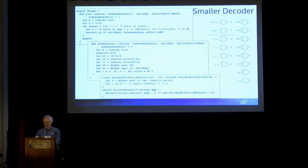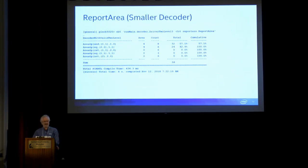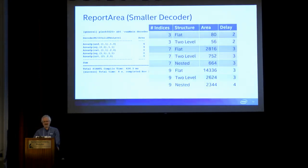Here's some Chisel code that'll do the same thing. Then you can run it through the area reporter. In this case, it's 56 units worth of area instead of 80 units worth of area. You can do this for various different sizes of circuits, and it actually matters as the number of indices gets bigger—that's quite a lot better to use this coincidence-like decoder.